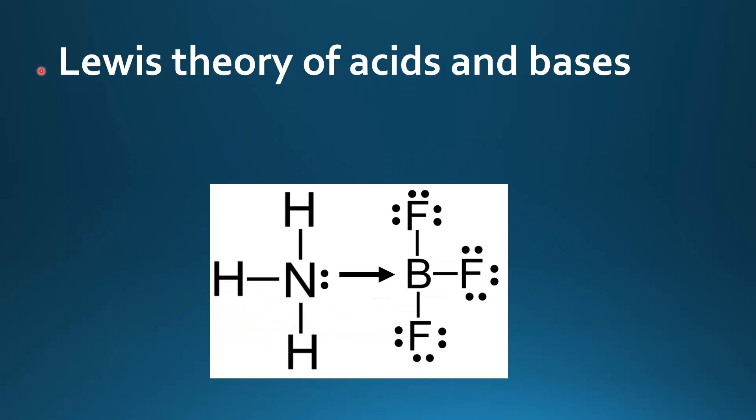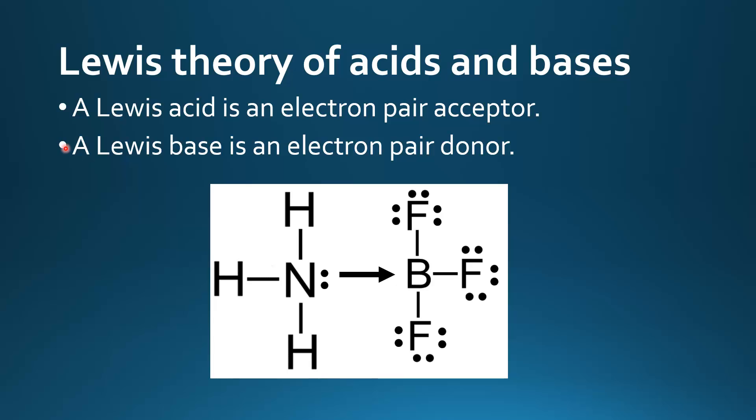Next we look at the Lewis theory of acids and bases. A Lewis acid is an electron pair acceptor. A Lewis base is an electron pair donor.